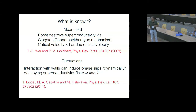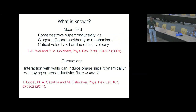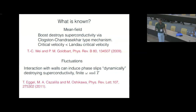But this is at the mean-field level — it completely ignores the effect of fluctuations. Another calculation was done which did take into account the effect of fluctuations and the effect of the walls of a container in which the superfluid was flowing, and it was shown that superconductivity is destroyed by the induction of dynamical phase slips. Various things were calculated.